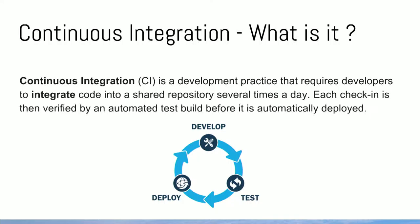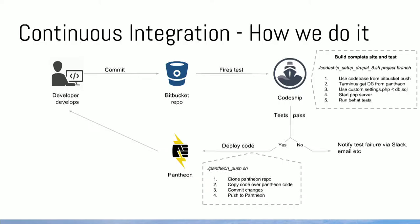So how do we implement CI, in particular around Pantheon, which is not so CI-friendly? A little diagram here: a developer does some work, commits to the Bitbucket repo. I'm not talking about branches here, just generally the flow. Does some work, commits to Bitbucket, then CodeShip watches Bitbucket and fires a test or a project build in CodeShip.